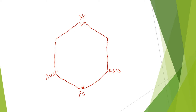So these are the points of reference in the abdomen: xiphisternum in the midline above, pubic symphysis in the midline below, costal cartilages on either side above, and the inguinal ligament on either side below, joined by the lateral abdominal wall. The abdominal viscera are within this abdominal cavity.